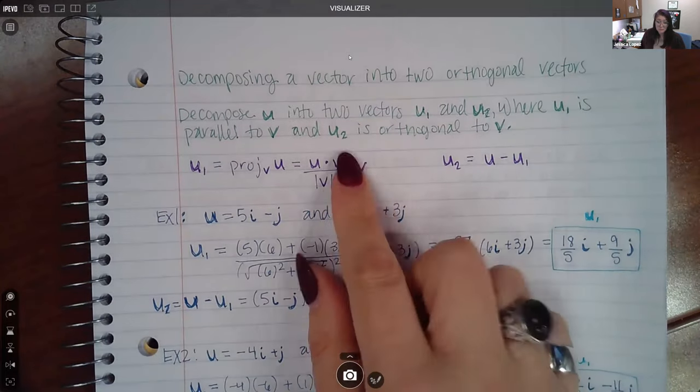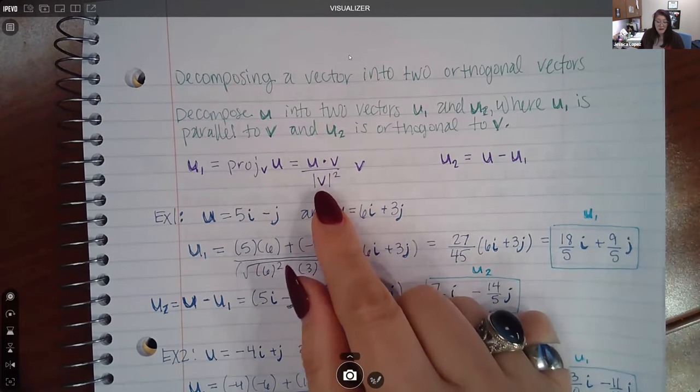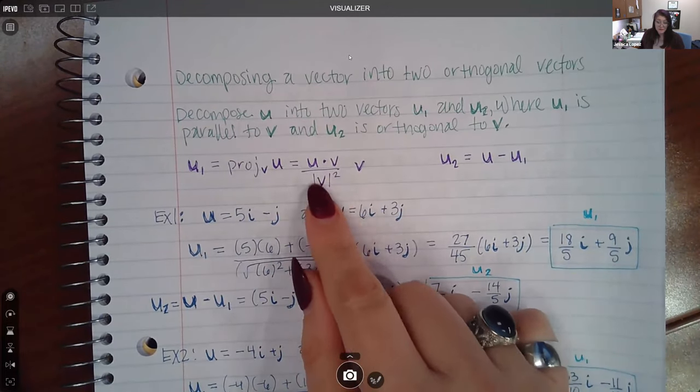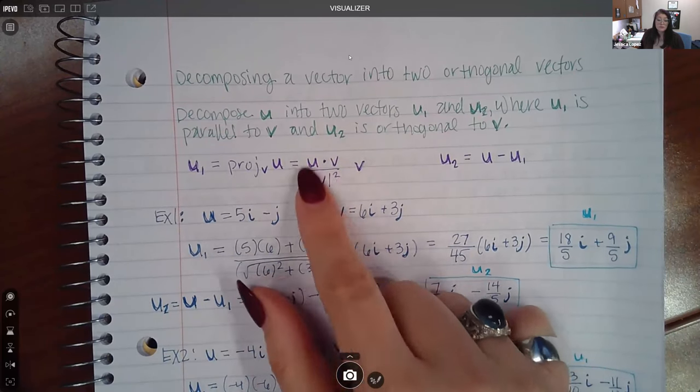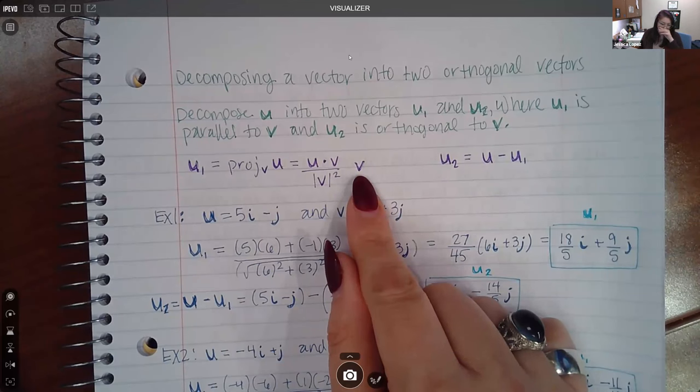So remember, when you take a dot product, you get a number. When you take magnitude, you get a number. And this is the magnitude squared, which is still a number. So you have some number that's going to get multiplied by vector V.